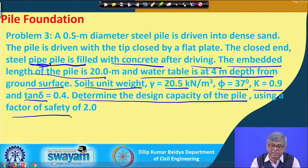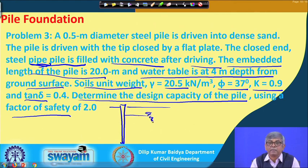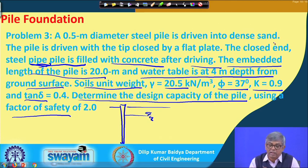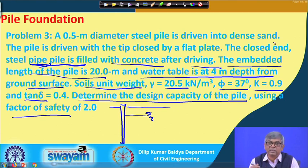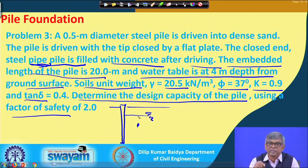The soil unit weight is 20.5 kN/m³, φ = 36–37 degrees, lateral pressure coefficient K = 0.9, and tan δ (friction between pile surface and soil) = 0.4. Determine the design capacity using a factor of safety of 2. For a pile in sand, friction depends on lateral pressure, which depends on vertical pressure. Since vertical pressure varies in sandy soil, friction also varies, requiring a pressure diagram.